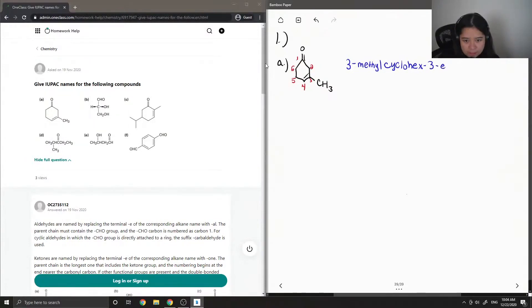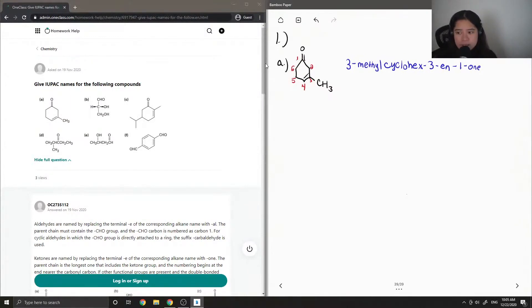Since it's a double bond, we put en. If it was a triple bond, we put ine. And then lastly, I just have to show that there is a ketone on carbon 1, so I would write 1-one. This gives us the name 3-methyl cyclohex-3-en-1-one.